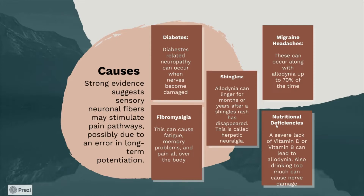Migraine headaches can occur along with allodynia up to 70% of the time. In nutritional deficiencies, a severe lack of vitamin D or vitamin B can lead to allodynia. Also, drinking too much alcohol can cause nerve damage.